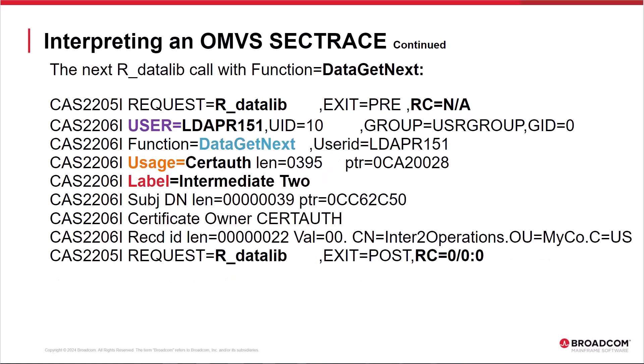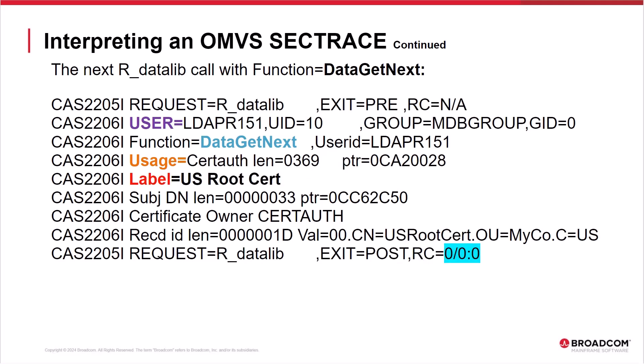Here are the next R_datalib trace entries associated with FUNCTION=DATA GET NEXT, requesting the next certificate. We see the first CES2205I pre-trace R_datalib call and the last CES2205I post-trace R_datalib call with zero return codes, indicating the certificate was returned successfully. Note that this entry only includes detail for the next certificate and not the key ring information from the first call. The user information and the certificate usage and label information is returned. This is the second of the three cert auth certificates in the signing chain.